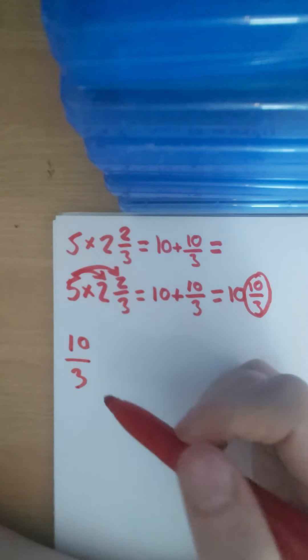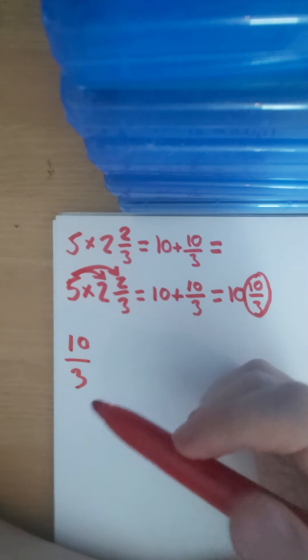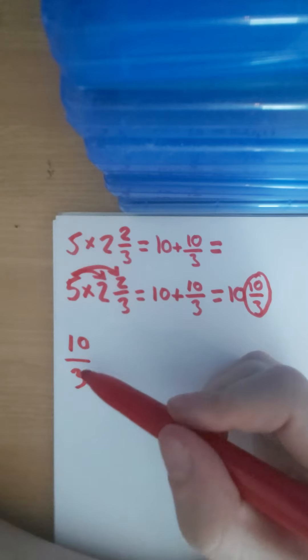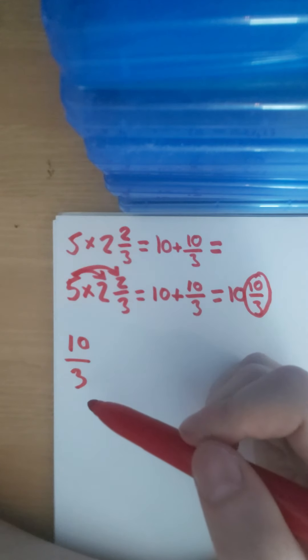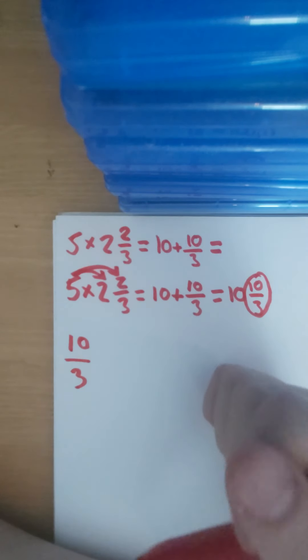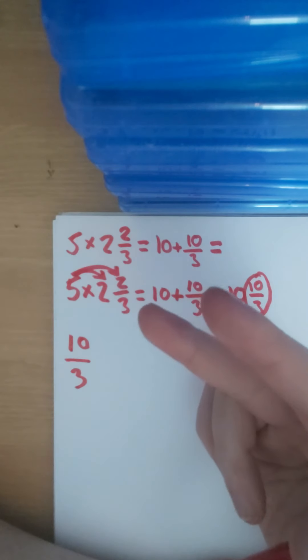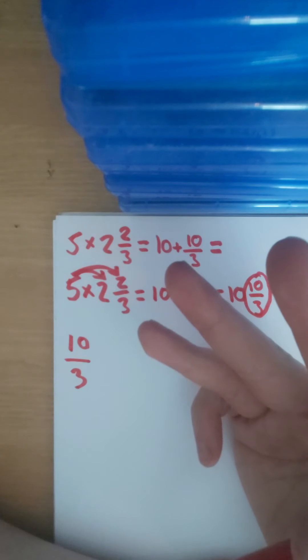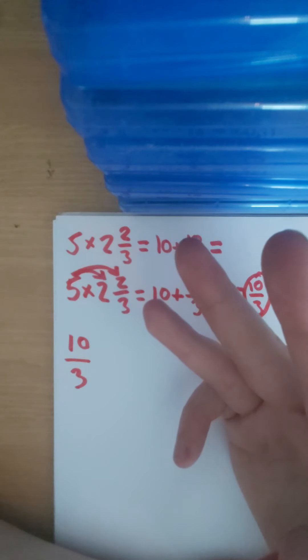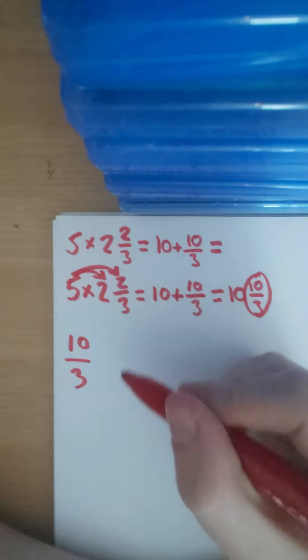This is where your knowledge of your times tables comes in really handy. So we need to know how many threes go into 10 and how many are left over. If we can use our fingers, we can go 3, 6, 9. If we count on we get 12, so that's too far, so we have to go back to 9.